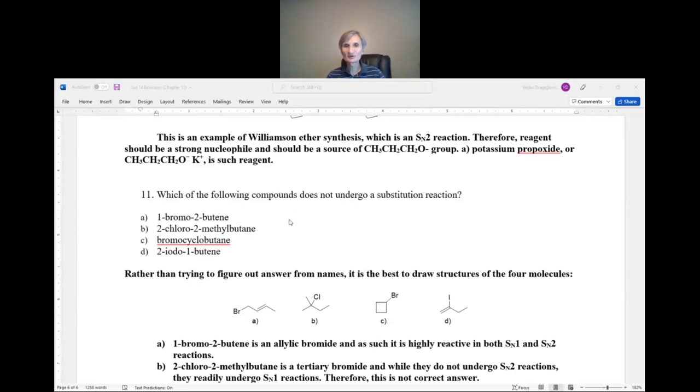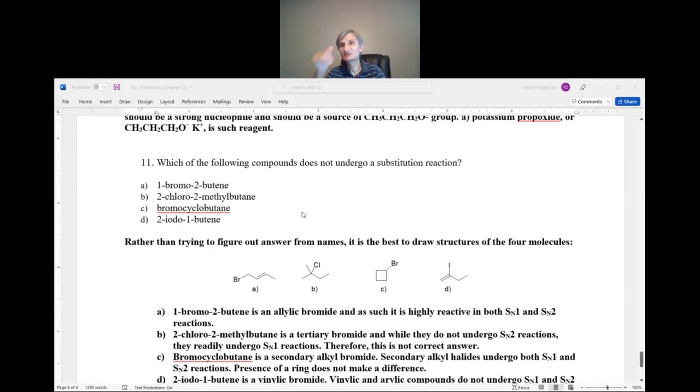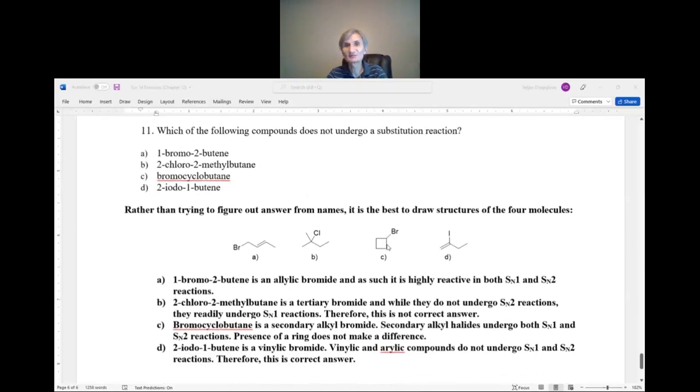11. Which of the following compounds does not undergo a substitution reaction? So, does not undergo, that means, which does not undergo SN1 or SN2? Neither. So, if it can undergo one or the other, then it undergoes substitution reaction. And so, of course, again, you should write down all the formulas. So, A. 1-bromo-2-butene. That's actually allylic bromide. This one readily undergoes both SN1 and SN2. So, A is definitely not the answer. This one undergoes everything. Reacts really readily.